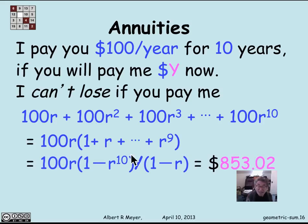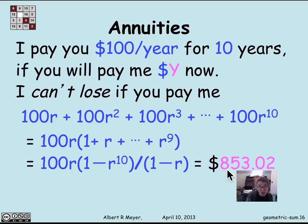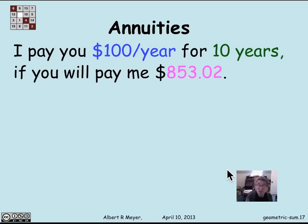We have a nice formula for that: it's simply (1 minus R to the 10th) over (1 minus R). Plugging in R equals 1 over 1.03, the conclusion is that this annuity is worth $853.02 today. My promise to pay you $1,000 spread out over the next 10 years is worth $853.02 today, assuming a bank rate of 3% per year. That's a typical case where geometric series come up.